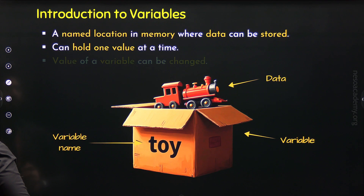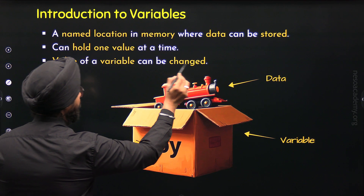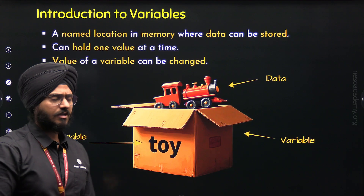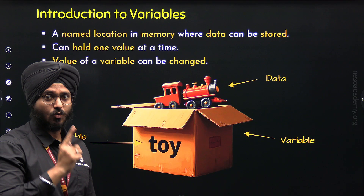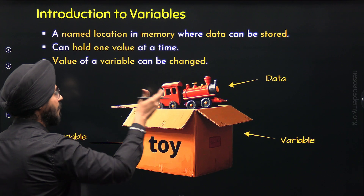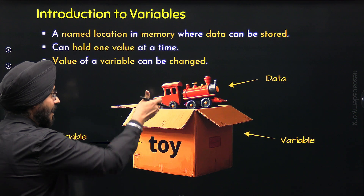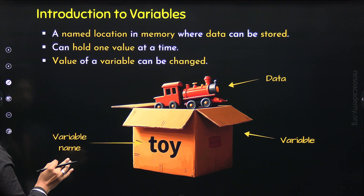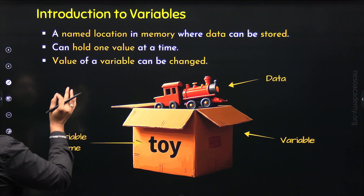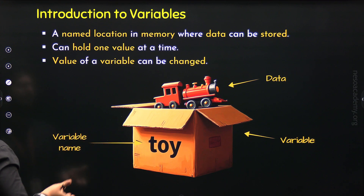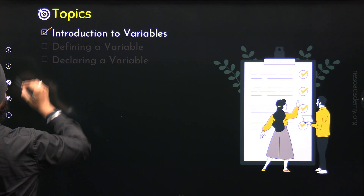The third point is that the value of a variable can be changed. It is not mandatory to have just one value throughout the lifetime of a variable — it can have different values, but only one value at a time. We can store a different item in this box: a ball, a teddy, or any other toy, not just a toy train. So a variable is a named location in memory where data can be stored, holding one value at a time, but that value can be changed later.